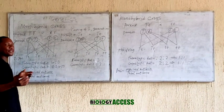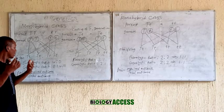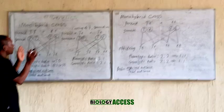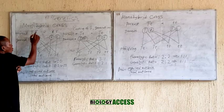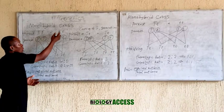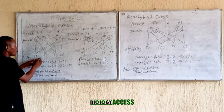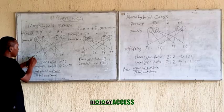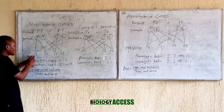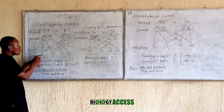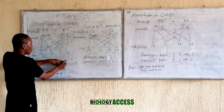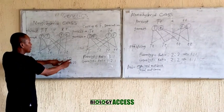Now we talk about the phenotypic ratio. In this case, we have only two phenotypes: tall or short. For a pea plant, it can either be tall or short. All four offspring here are tall, because capital T is dominant over small t. So the phenotypic ratio is 4 tall and 0 short.